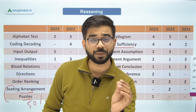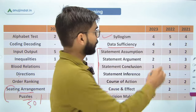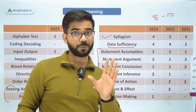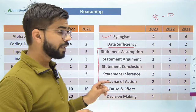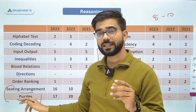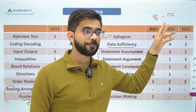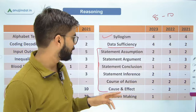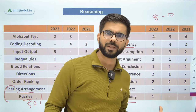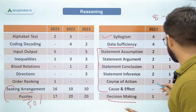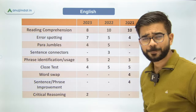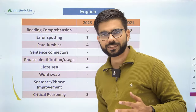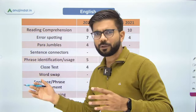Critical reasoning also carries good weightage — around 8-10 questions can be asked from critical reasoning. So the major chunks are: seating arrangements and puzzles (~30 questions), critical reasoning (~8-10 questions), and the remaining questions come from alphabet test, coding-decoding, input-output, and inequalities. Decision making is also important and has been asked in recent years. That is the overall syllabus of Reasoning.